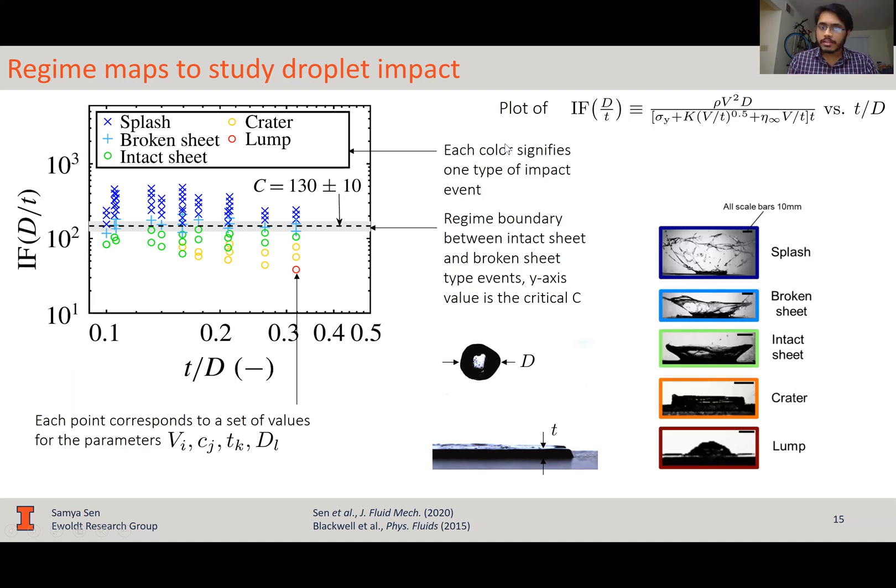Also, in this map, each color signifies one specific type of impact event, which is basically classifying the drop impact events we saw in the previous video using this criterion. And most important thing to note about these maps is the regime boundary between intact sheet and broken sheet type events, which is the y-axis, and is a critical value of c for a stick to splash transition.